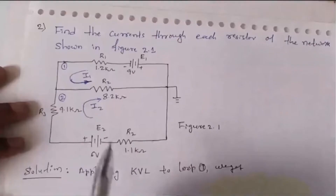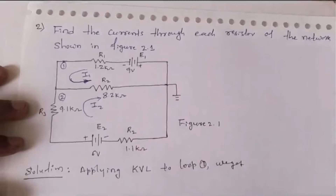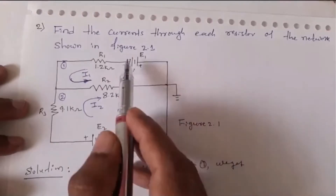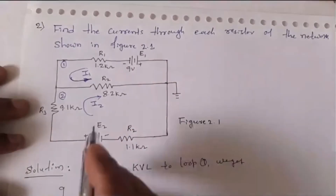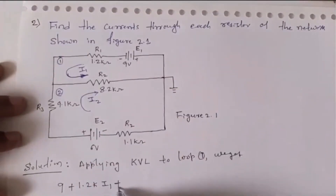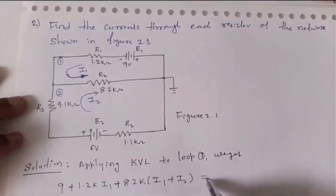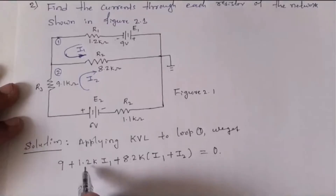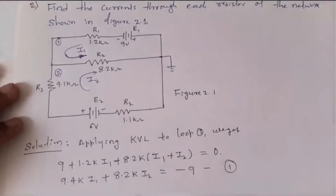Applying KVL to loop one: considering plus-to-minus as positive, the voltage source gives +9 V (or considering sign convention), resistor 1.2 kΩ gives +1.2k·i1, and resistor 8.2 kΩ carries both i1 and i2 in the same direction giving +8.2k·(i1 + i2) = 0. Combining: 9.4k·i1 + 8.2k·i2 = -9. This is equation number one.